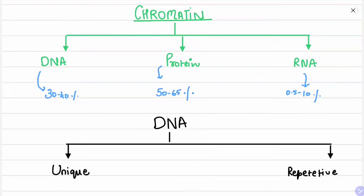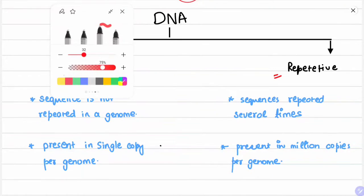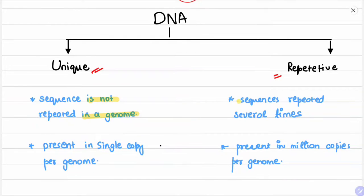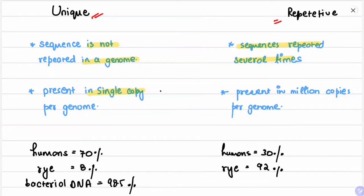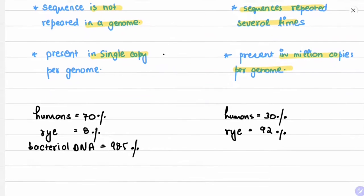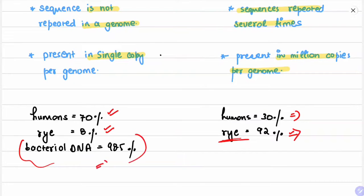Chromatin is made up of three things: DNA, protein, and RNA, where protein is the maximum — 50 to 65 percent. DNA is of two types: unique DNA and repetitive DNA. Unique DNA is not repeated in the genome and is present in single copy; repetitive DNA is repeated several times and is present in multiple copies. In humans, 70 percent of the genome is unique; in rye, only 8 percent is unique (so 92 percent is repetitive). Bacterial DNA mostly has unique DNA sequences.